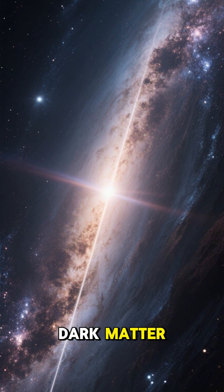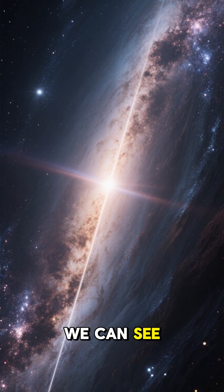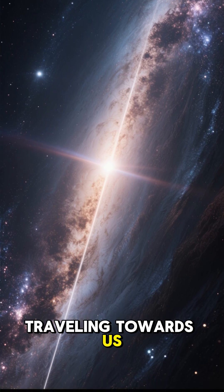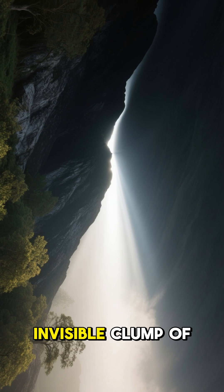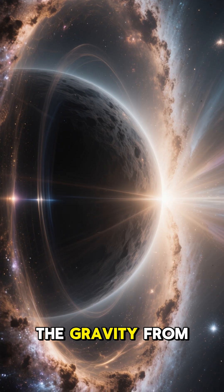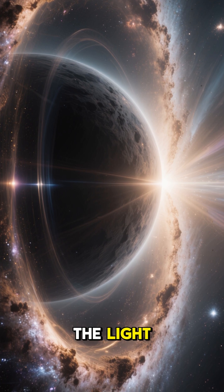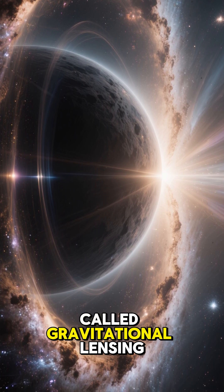We can't see dark matter, but we know it's there because we can see its effects. Imagine light from a distant galaxy traveling towards us. If it passes by a huge, invisible clump of dark matter, the gravity from that clump acts like a lens, bending and warping the light. This phenomenon is called gravitational lensing.